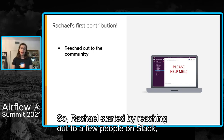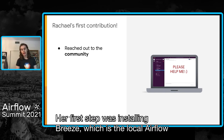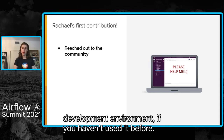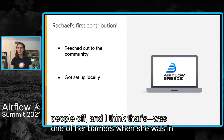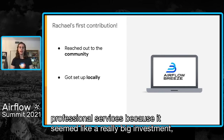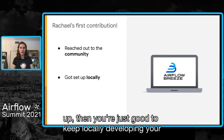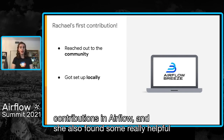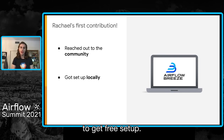Rachel started by reaching out to a few people on Slack, and they took the time to guide her through raising and submitting her first contribution. Her first step was installing Breeze, which is the local Airflow development environment. Getting this set up locally for the first time can sometimes be what puts people off — it seemed like a really big investment — but she realized that this is a one-off time cost, and once it's set up you're good to keep locally developing your contributions. She also found some really helpful videos that other contributors have made that make it even easier to get Breeze set up.